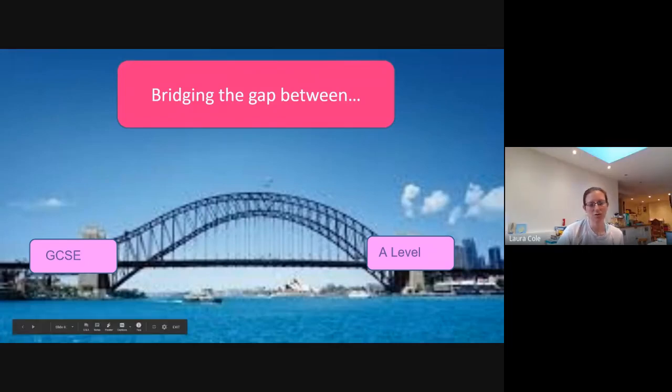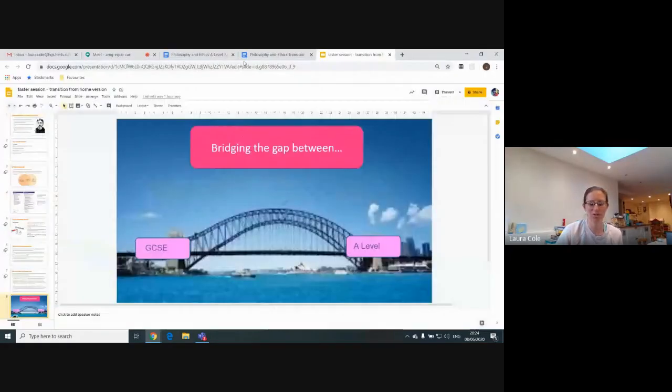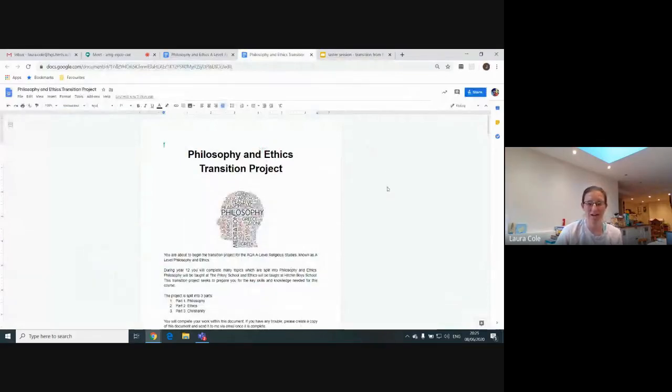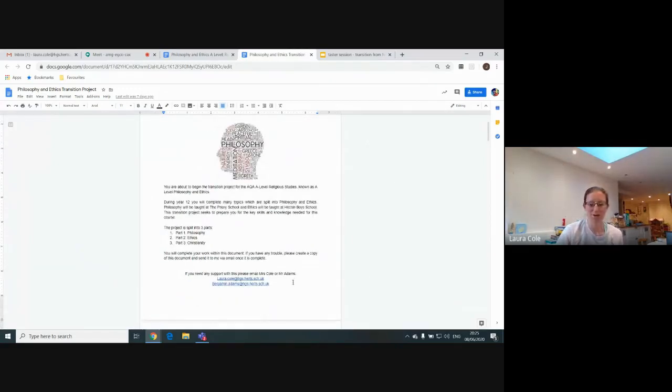I'm going to talk you through the project now. The primary transition project is divided into three parts just like the A-level: a philosophy part, an ethics part and a Christianity part. You'll need to read through the project. If you get stuck on any aspects, myself and Mr Adams have our email addresses here so please feel free to use them.